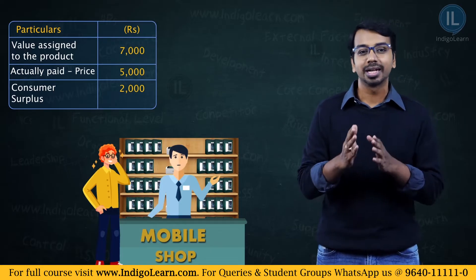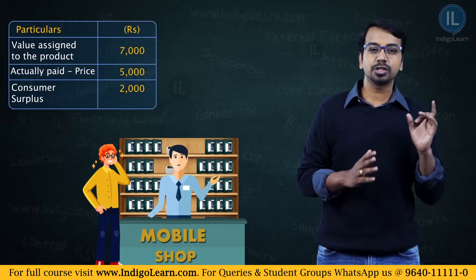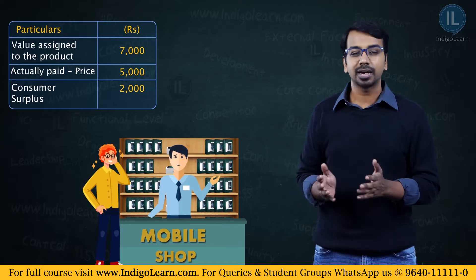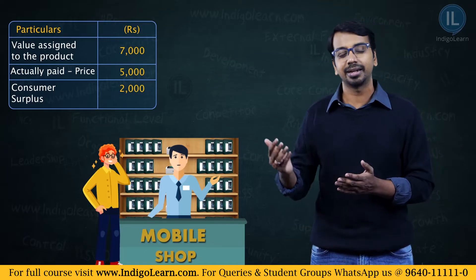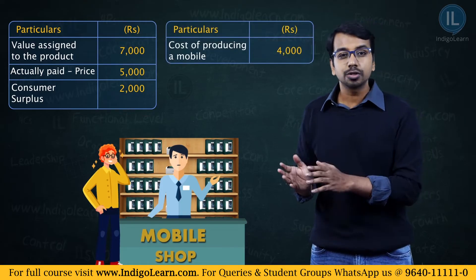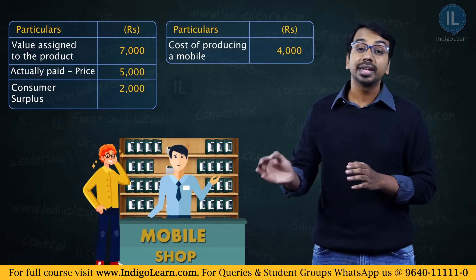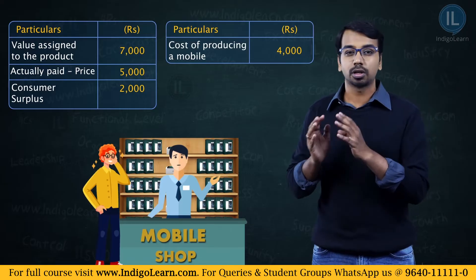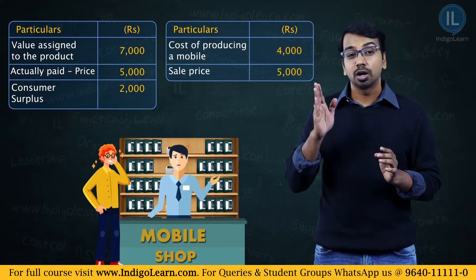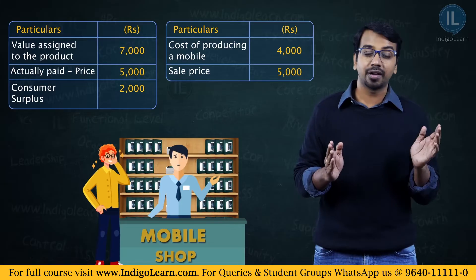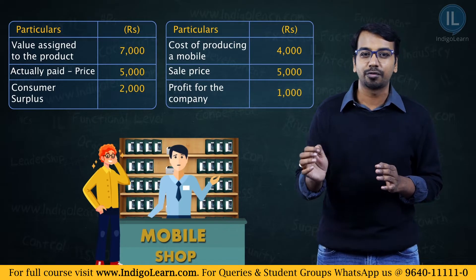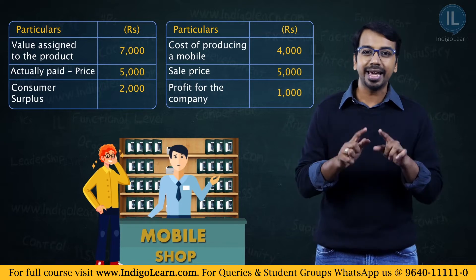Now to produce this mobile phone, the company carried out a number of primary and secondary activities and incurred a cost of 4000 rupees. The cost to the company to create this particular product is 4000 rupees. The company charged a price of 5000 rupees. So 5000 minus 4000 — 1000 rupees is the profit for the company.